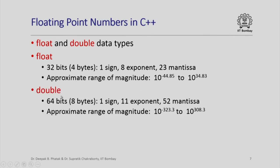The other floating point data type is double, which uses 64 bits or 8 bytes: 1 bit for the sign, 11 bits for the exponent, and 52 bits for the mantissa. With double you have a much larger range of magnitudes — approximately 10 raised to -323.3 to 10 raised to 308.3. Once again, it is instructive to try to calculate these ranges from the number of bits in the exponent and mantissa.